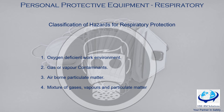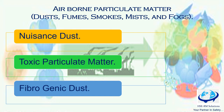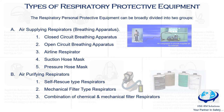After discussing those classification requirements, we covered three types of airborne particulate matter: nuisance dust, toxic particulate matter, and fibrogenic dust. Then we began explaining the types of respiratory protective equipment, which are broadly divided into two categories: air-supplied respirators and air-purifying respirators.